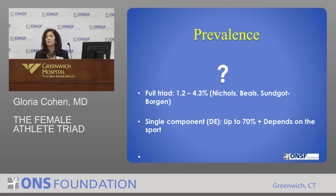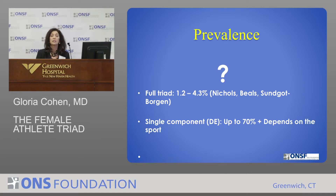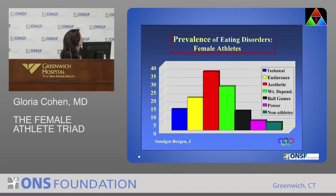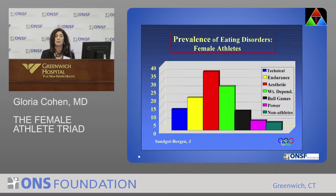The prevalence is difficult to say because in many situations it's hidden — they may not present themselves. The full triad is felt to be anywhere between 1.2% to 4.3%, based on a study by Nichols and Bales for the IOC commission. A single component, such as disordered eating, may be up to 70%, depending on the sport and on recognition and reporting. As you can see in the chart, prevalence is much greater in endurance and aesthetic sports compared to non-athletes.